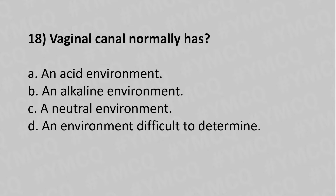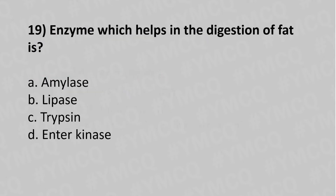Now let's move to question number eighteen: The environment preferred by pepsin for its activity is which of the following? Option A: an acidic environment. Option B: an alkaline environment. Option C: a neutral environment. Option D: an environment difficult to determine. The answer is Option A: an acidic environment.